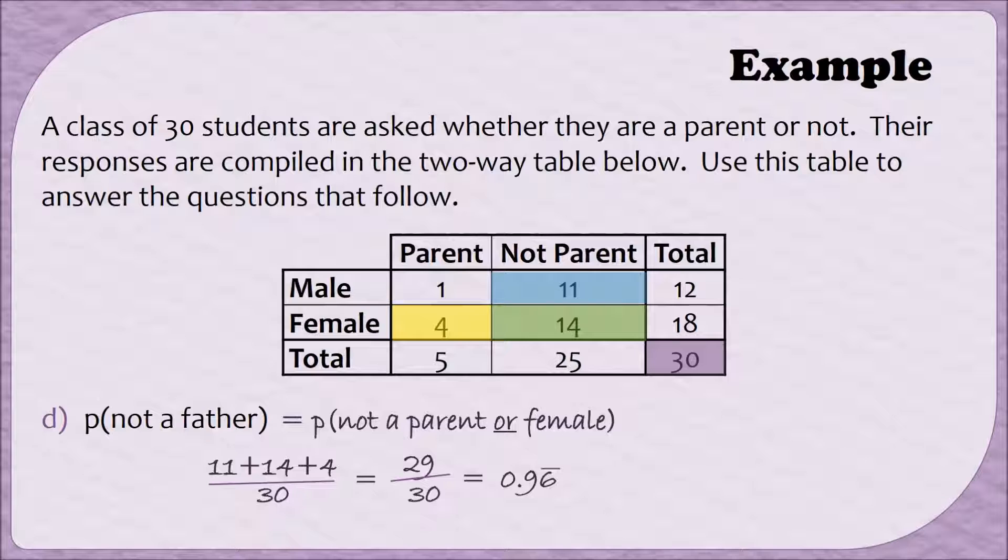Now, I'll point out that another way we could have found this probability was by subtracting our answer to part b from 1. In part b, we found the probability that somebody was both male and a parent. This probability, the probability of not a father, is the complement to our answer to part b, so if we took our answer to part b and subtracted it from 1, we would get the same answer. Knowing multiple ways to find a solution is an excellent way to be able to check your work.